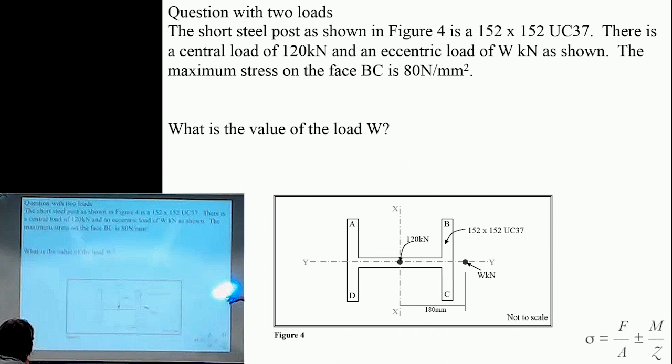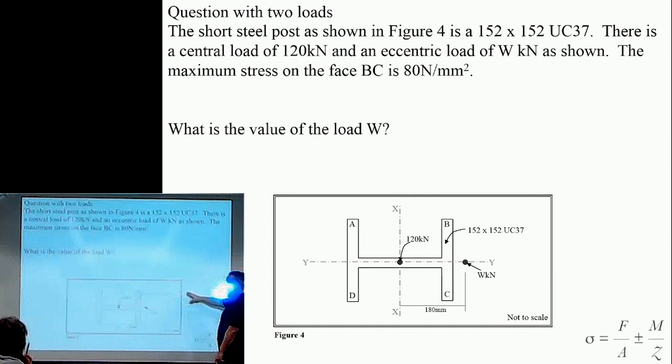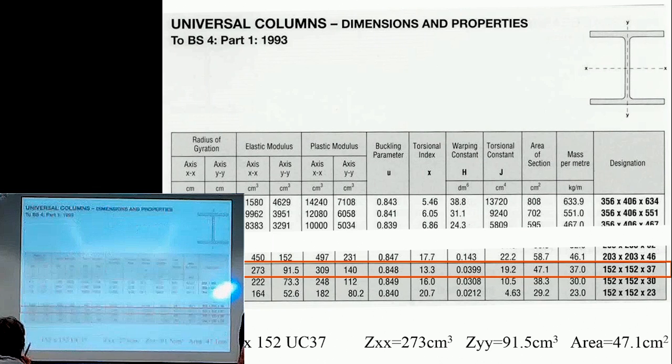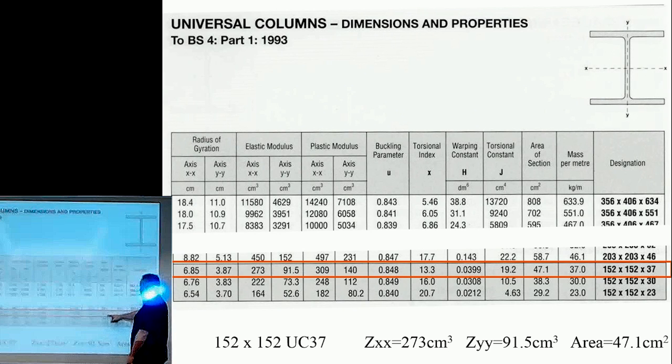I'll take you through this question. Given what size column it is, this is where you're going to be getting your area from and your Z, your elastic modulus. So we go to our table at the back, pick off the correct column, and then go all the way along to our area. Our area is 47.1 centimeters squared.